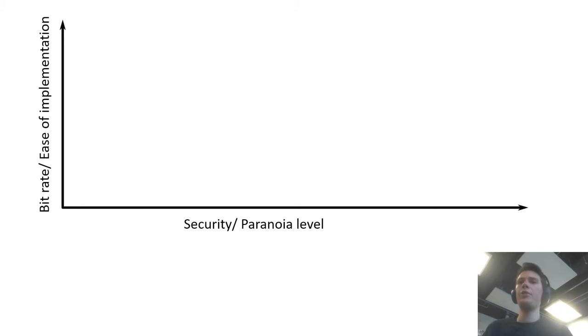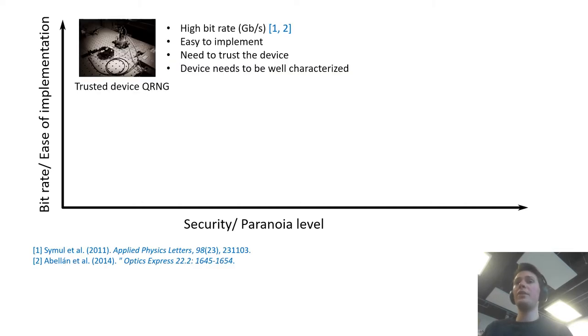So to give a nice overview of the different types of QRNG, it's quite neat to plot them on a graph like this where on the x-axis you have the security of the device or the paranoia level of the owner of the device and then on the vertical axis you have the bit rate, the speed of the device, also the ease of implementation.